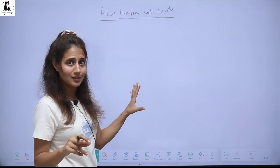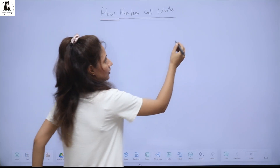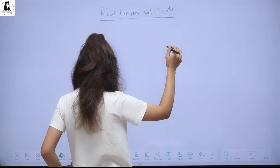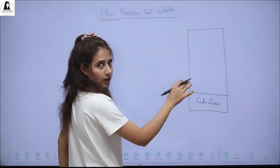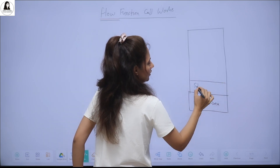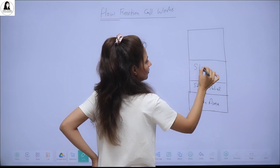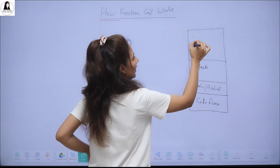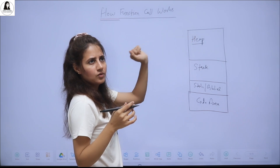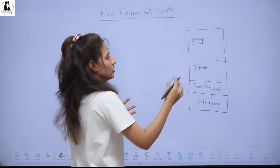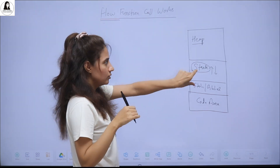Before discussing the actual working, let me show you how memory is laid out for your program in computer memory. The memory is divided into segments: we have the code area where the actual program is stored, then a segment for static or global variables, then we have the stack memory area, and then the heap — which is free storage. The heap will be discussed when we cover dynamic memory allocation. When we are calling functions, the stack memory is used.